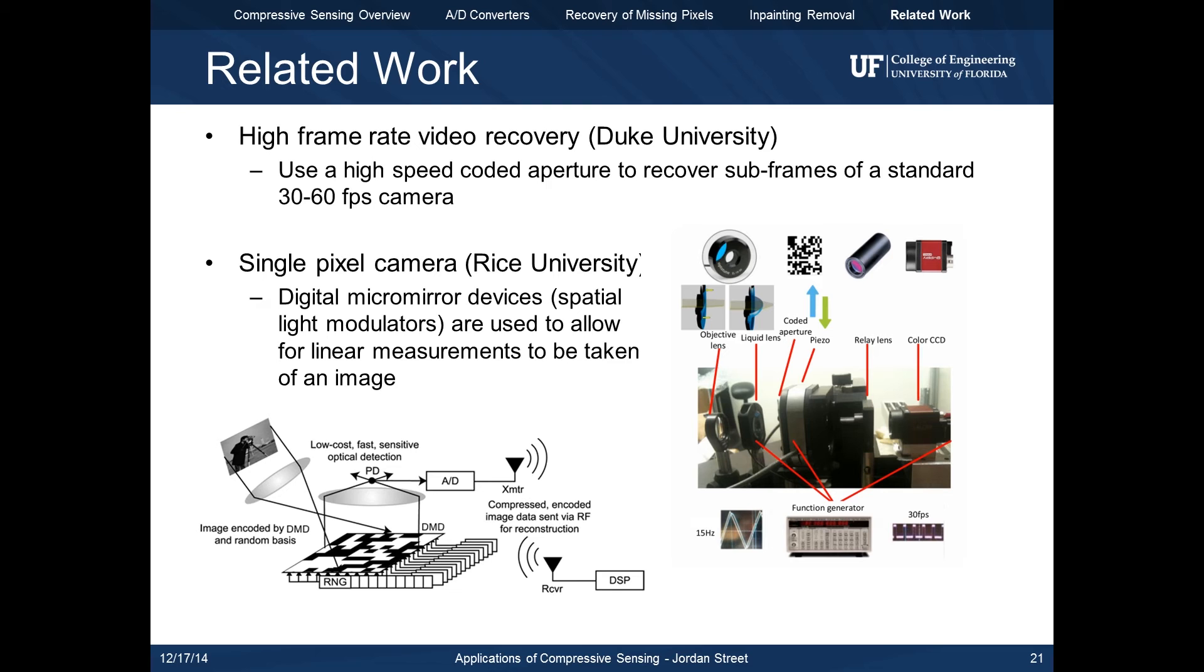Another example is the single pixel camera built at Rice. Digital micromirror devices, which are a form of spatial light modulators, are used to take linear measurements of multiple pixels in an image. The image is then developed offline using the same compressive sensing techniques.